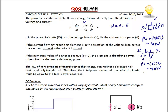Once you have the numeric value for the power, if the power is a positive number, then the element is absorbing power. Conversely, if the power is a negative number, then the element is delivering power. So the second element is delivering and the first element is absorbing. You always have to look at the numeric value in order to determine if the element is delivering or absorbing power.